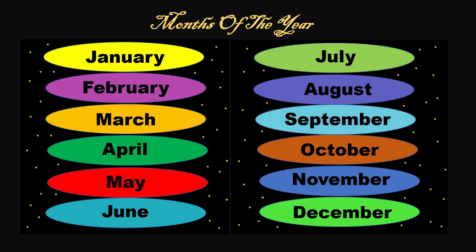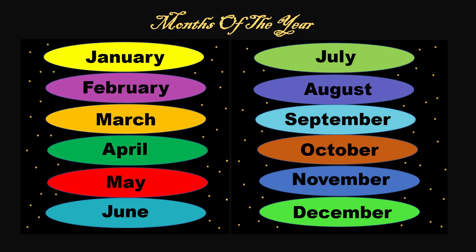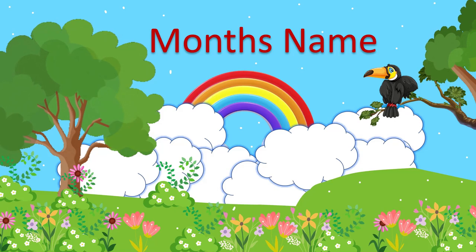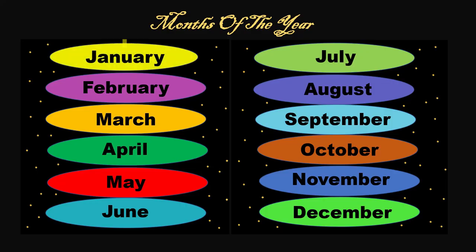The tenth month is October — O-C-T-O-B-E-R — October. The eleventh month is November — N-O-V-E-M-B-E-R — November. The twelfth and last month of the year is December — D-E-C-E-M-B-E-R — December. So kids, now you know the months of the year!